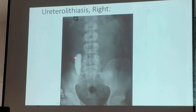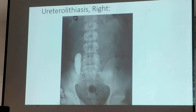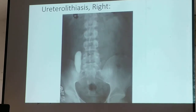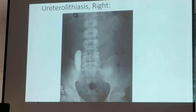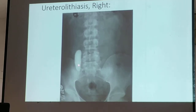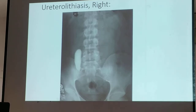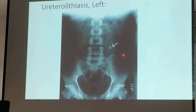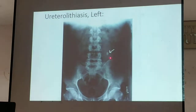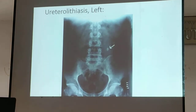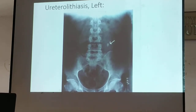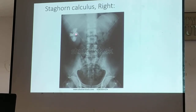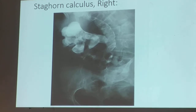What would you expect if you have this ureteral stone on the right? There would be marked dilatation of your right kidney — marked hydronephrosis of your right kidney — because there is a distal obstruction of your right ureter. This one would be more of a ureteral stone on the left. A ureteral stone medically would be termed ureteral lithiasis. This would be your staghorn calculus on the right kidney. This one is a bigger staghorn calculus.